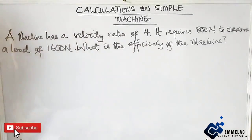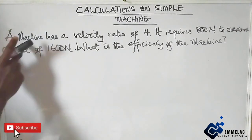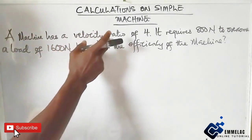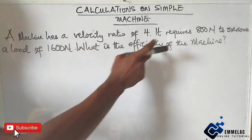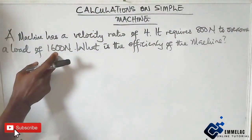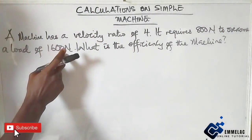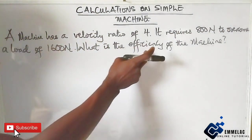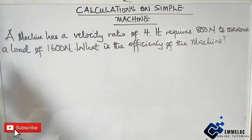Welcome to Emelac online tutorial. Before us is this question in simple machines. A machine has a velocity ratio of 4. It requires 800 Newton to overcome a load of 1600 Newton. What is the efficiency of the machine?